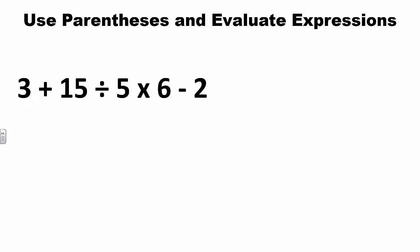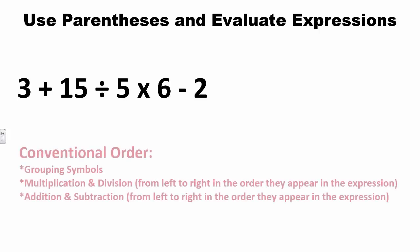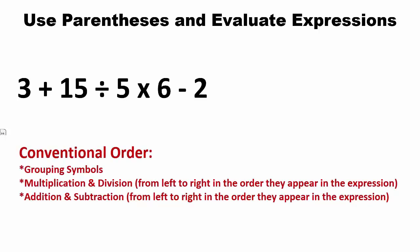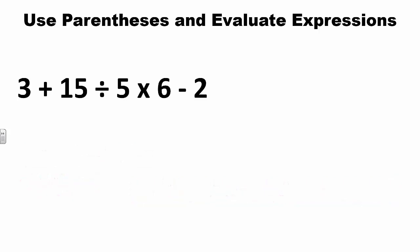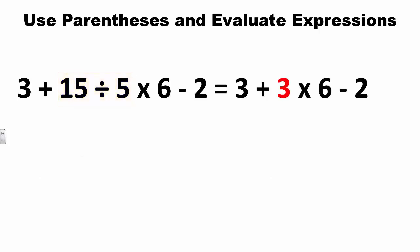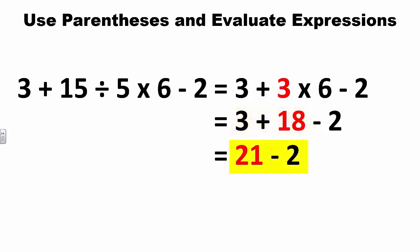Let's look at one more example: 3 + 15 ÷ 5 × 6 − 2. In this problem, there are no grouping symbols, so we begin by completing multiplication and division operations in the order they appear from left to right. We start with division since it occurs first: 15 divided by 5 equals 3. Next, we multiply: 3 times 6 equals 18. In the final step, we add and subtract in order: 3 plus 18 equals 21, and 21 minus 2 equals 19.